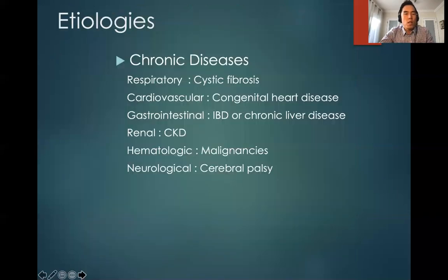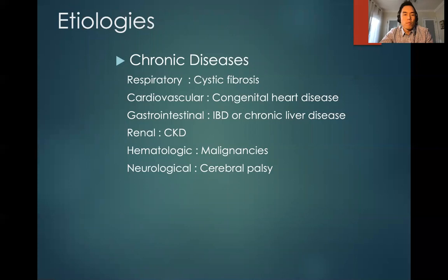When talking about etiologies of poor growth, I think of it as a very broad concern because many systems can cause growth problems. For example, cystic fibrosis causes growth failure; chronic kidney disease often leads to very poor growth; and GI conditions such as inflammatory bowel disease or chronic liver disease can also affect growth. Many chronic diseases will affect growth, so you want to elicit these in the history.